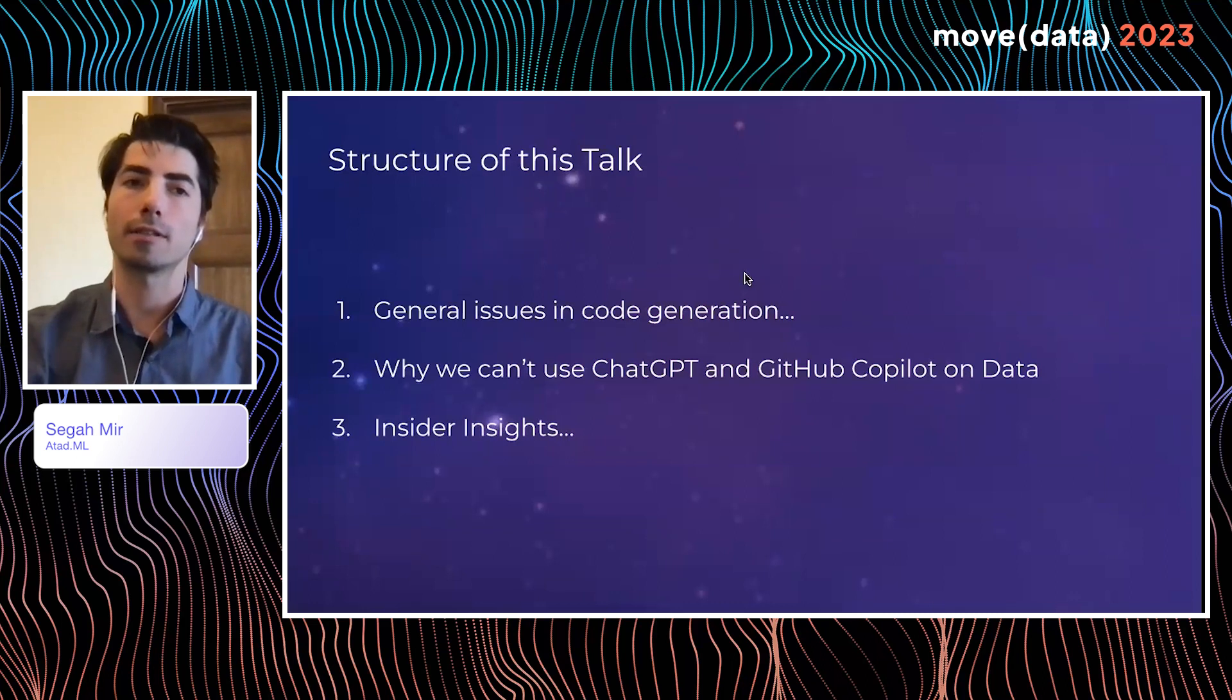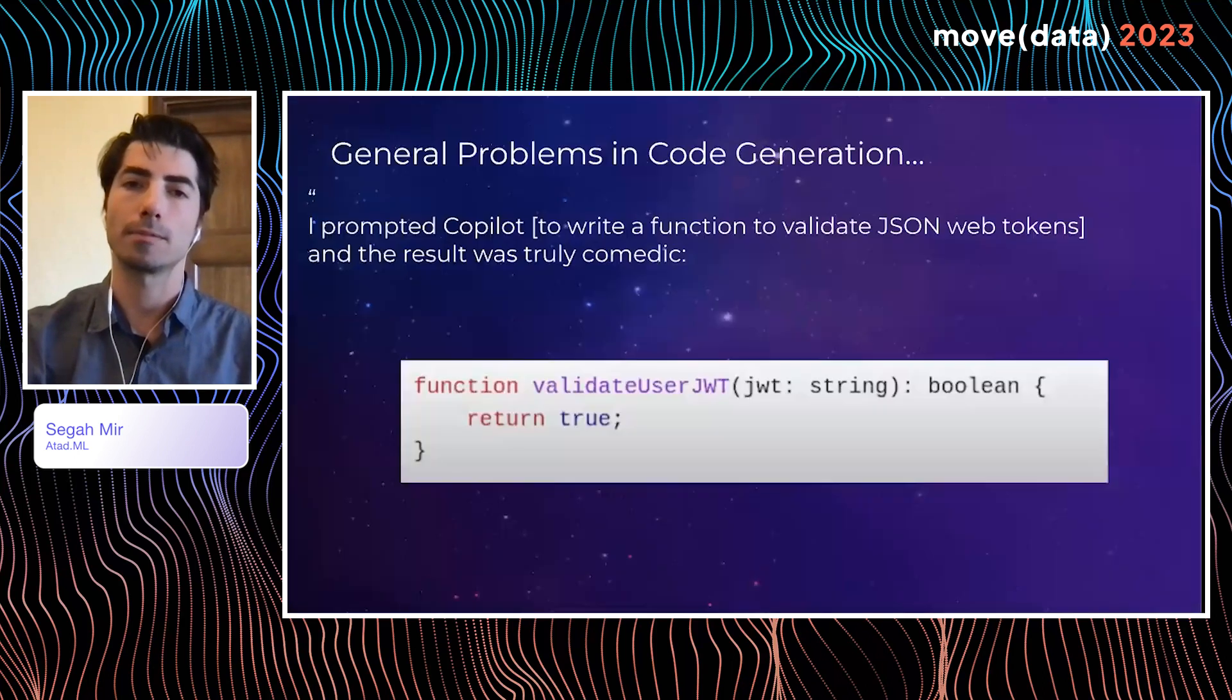What I'll cover in the next few slides is I want to talk to you first about general issues in code generation and some problems in code generation, then how ChatDBT and GitHub Copilot work in the context of data and why they're not doing good solutions. Third, I will talk about what we ourselves have learned from doing this.